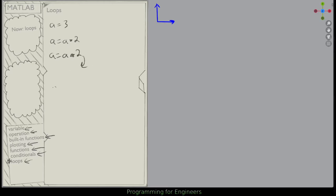You could also do A equals A times 2 to the 100, but let's say for example's sake you couldn't do this 2 to the 100 and you want to be able to do this without actually having to write it out. Well, the way you can do this is with loops.